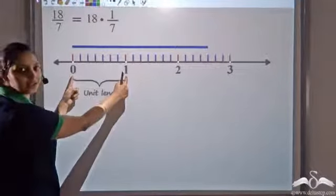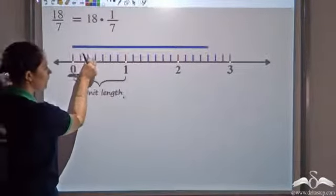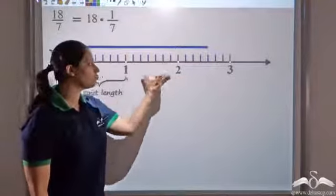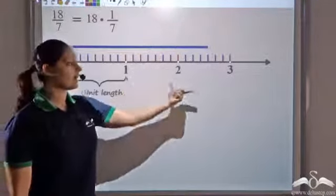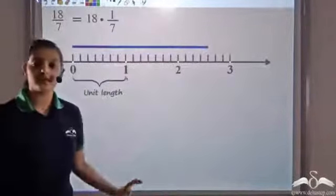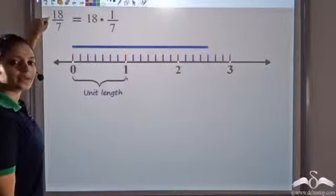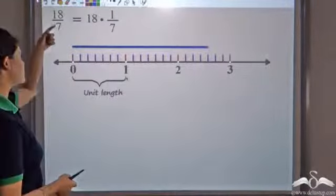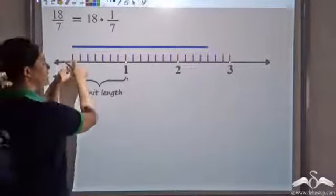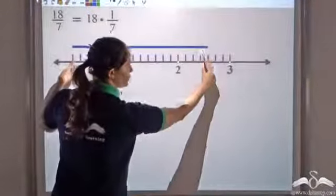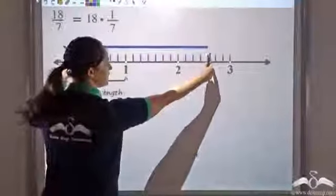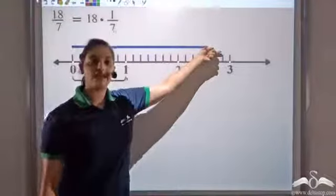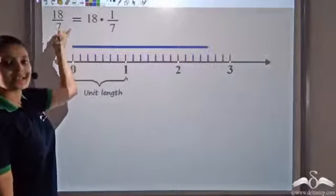I have this unit length and I divide it into seven equal parts — one, two, three, four, five, six, seven. Similarly, the unit length from one to two is also divided into seven equal parts, and every unit length can be divided into seven equal parts. The numerator tells me the number of such parts. The numerator here is eighteen, so eighteen such parts. This blue line indicates eighteen of such parts, which gives me eighteen by seven. So this blue line is actually the length of the number eighteen by seven on the number line.